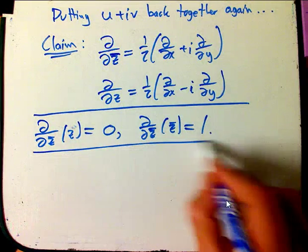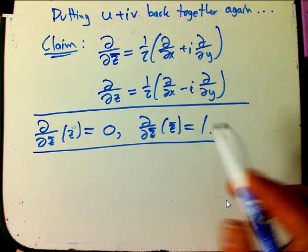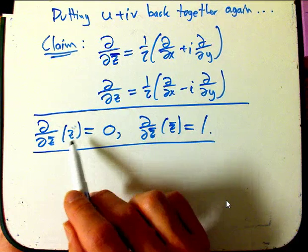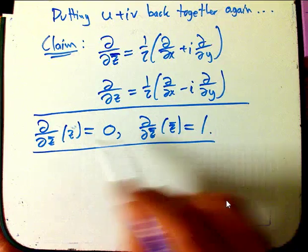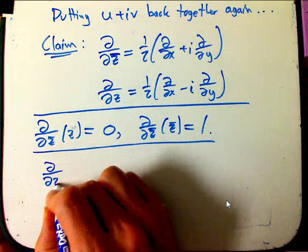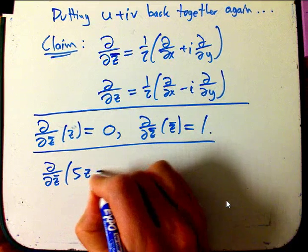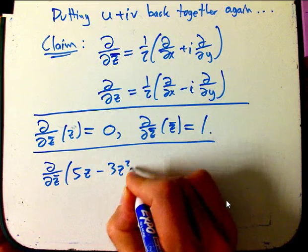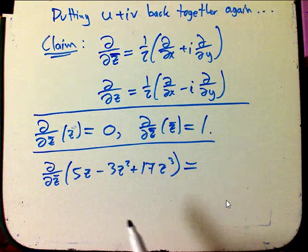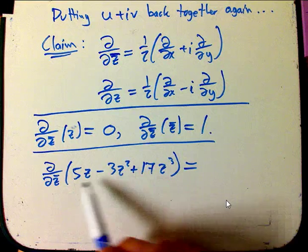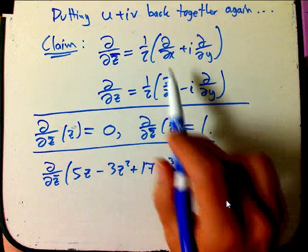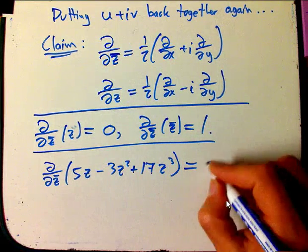So, for example, think about when we first started analyzing these functions. We discovered that z and z squared and z cubed, all monomials in z, were nice. They had complex derivatives. Whereas z bar and things built out of z bars are not. Well, so, similarly, d by dz bar of, like, 5z minus 3z squared plus 17z cubed, that's going to be zero. It's not too hard to show that all your usual rules, product rules and stuff work for these guys, just like they work with ordinary partial derivatives, because it's just a combination of ordinary partial derivatives. That's going to be zero.